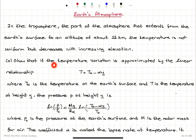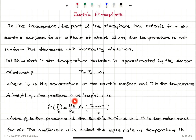Part A shows that if the temperature variation is approximated by the linear relationship T = T₀ minus α·y, where T₀ is the temperature at the Earth's surface and T is the temperature at height y, the pressure P at height y is: ln(P/P₀) = (mg)/(Rα) · ln((T₀ - αy)/T₀), where P₀ is the pressure at the Earth's surface and M is the molar mass for air.